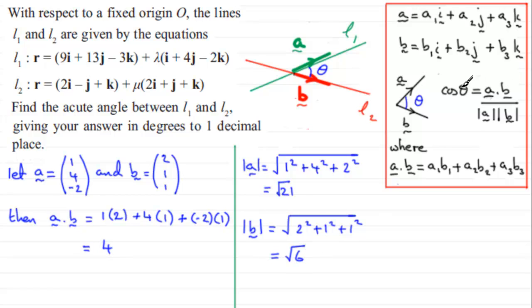So we're now in a position to write down the cosine of theta. Therefore, cosine of theta is equal to A dot B, which is four, divided by the magnitude of A and B. So that's the root of 21 multiplied by the root of six.